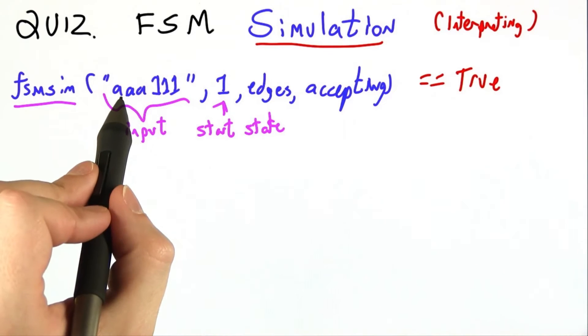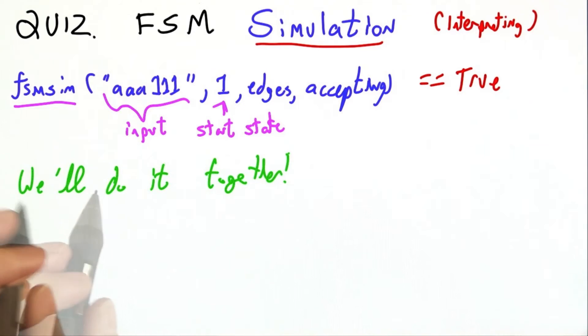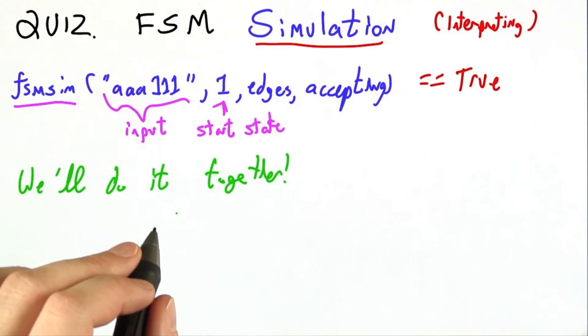And it returns true if that string is accepted by the finite state machine and false otherwise. We'll do it together. Submit via the interpreter. I'll write the first half of this procedure with you.